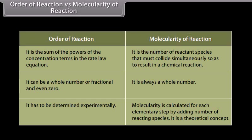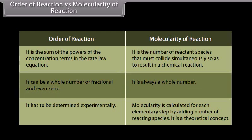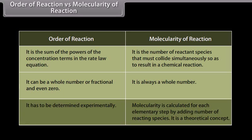The important differences between order of reaction and molecularity: order of reaction is the sum of the powers of the concentration terms in the rate law equation, whereas molecularity is the number of reactant species that must collide simultaneously to result in a chemical reaction. Order of reaction can be a whole number, fractional, or even zero, whereas molecularity is always a whole number. Order of reaction must be determined experimentally, whereas molecularity is calculated for each elementary step by adding the number of reacting species — it is a theoretical concept.